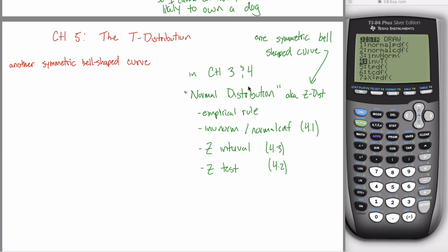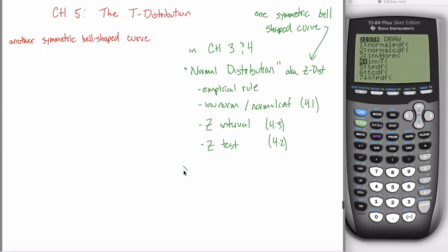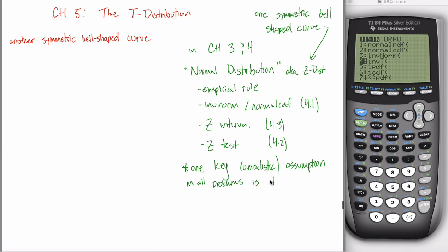Much of what we do works with the z-distribution. The central limit theorem works really nicely with the z-distribution. All the questions you've asked so far work great with the z-distribution. However, there's one key unrealistic assumption: you can only use the z-distribution if you know the population standard deviation. So one key unrealistic assumption in all these problems is that we know sigma — the population standard deviation.